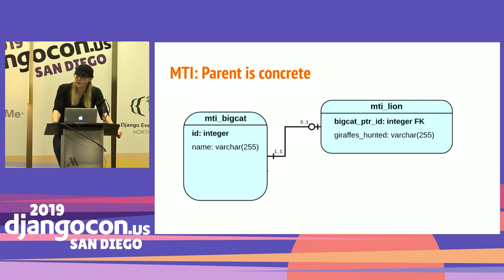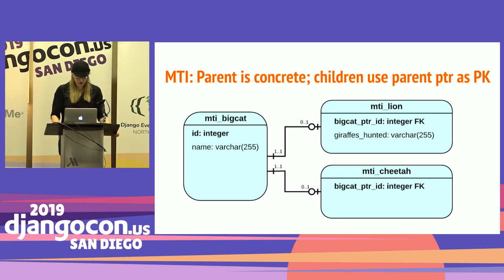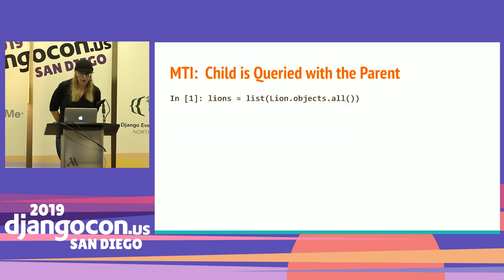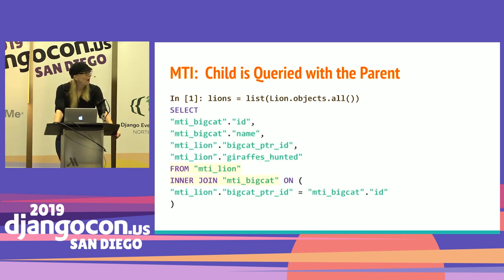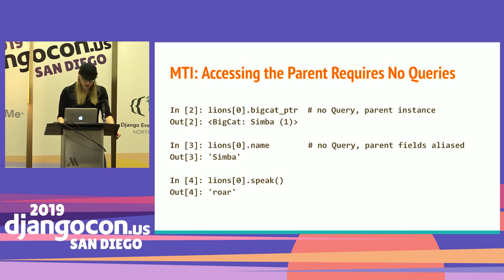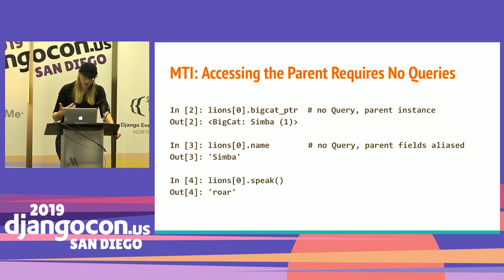This is called concrete inheritance because the parent class is concrete. We have a big cat table in the database with an ID and name field. The lion table has a big cat pointer — a foreign key back to big cat — then adds its own fields like giraffes hunted. Notice there's no separate ID field; the primary key of the lion table is this big cat pointer ID. You could implement this explicitly with one-to-one relationships if you wanted.